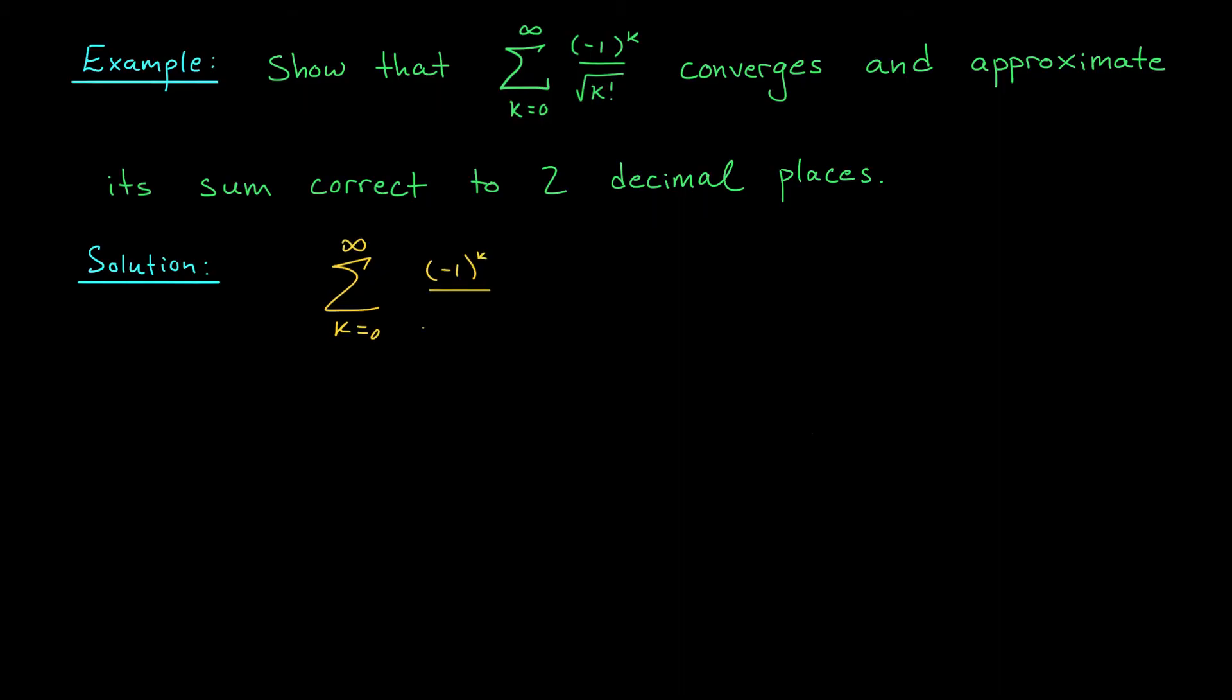So our first job is to show that this series converges. And as you may have guessed from the minus 1 to the k in the numerator, this series is alternating. Sure enough, our series is given by 1 over the square root of 0 factorial, minus 1 over the square root of 1 factorial, plus 1 over the square root of 2 factorial, minus 1 over the square root of 3 factorial, and so on. It's alternating. So a natural choice for us is the alternating series test.